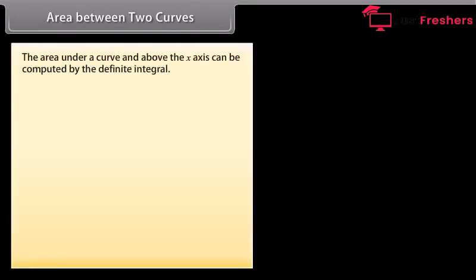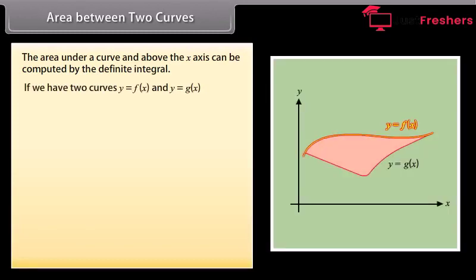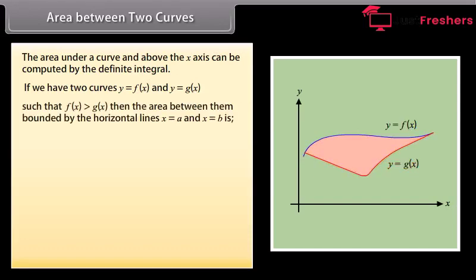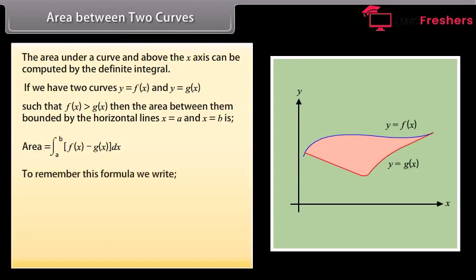Area between two curves: The area under a curve and above the x-axis can be computed by the definite integral. If we have two curves y = f(x) and y = g(x) such that f(x) ≥ g(x), then the area between them bounded by the lines x = A and x = B is: Area = ∫ from A to B of [f(x) − g(x)] dx. To remember this formula, we write: Area = ∫ from A to B of (top − bottom) dx.